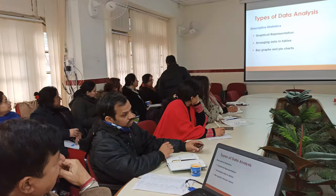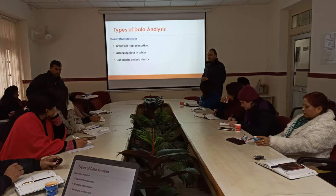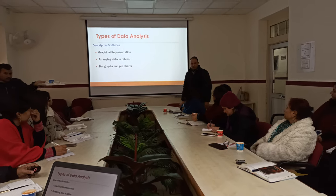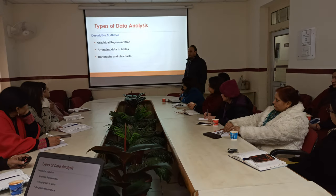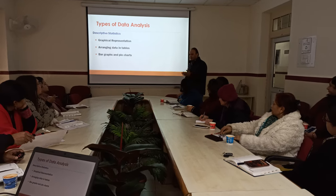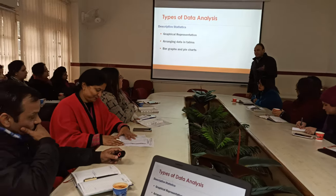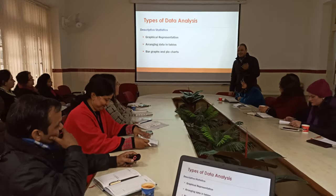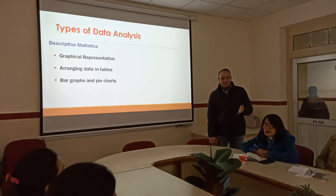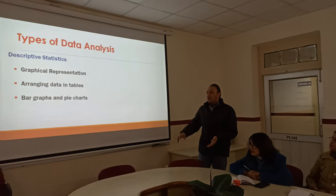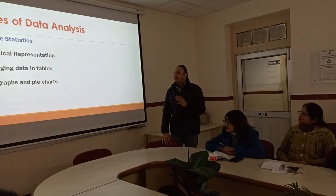So how are we going to present data? One way is graphical representation. What kind of graphs are we actually using? Bar graphs, histograms, pie charts, frequency polygons, and ogive curves. An ogive is basically a cumulative frequency percentage curve. So there are various ways of representing data — similarly arranging data in tables, bar graphs and pie charts.